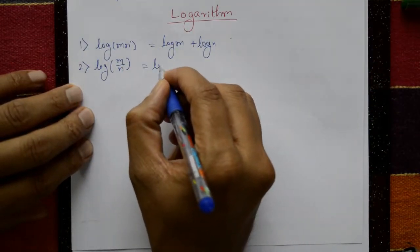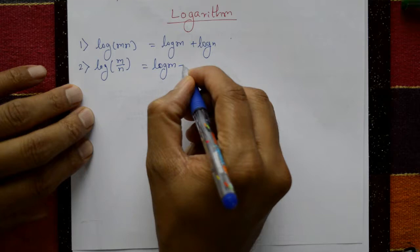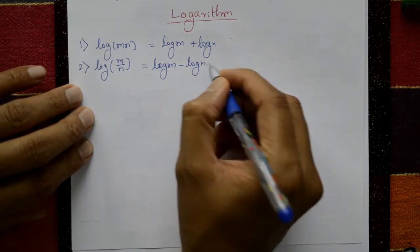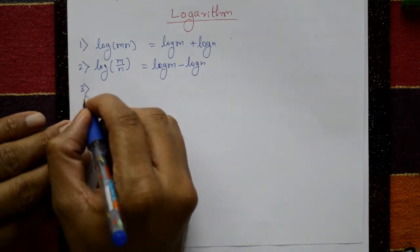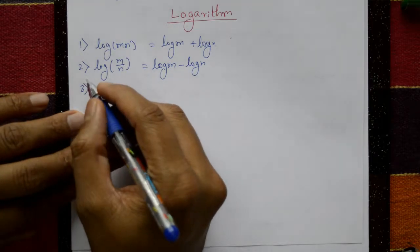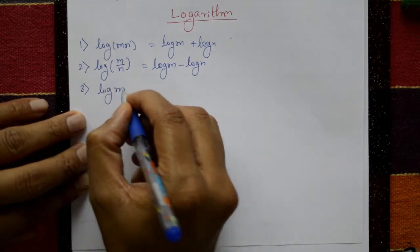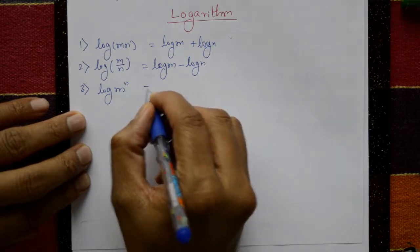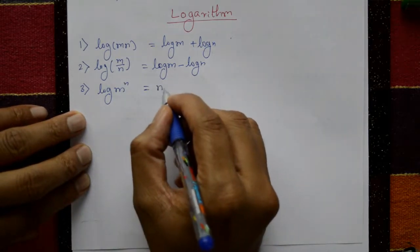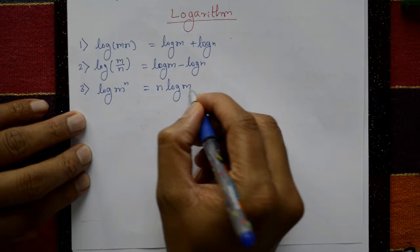This is equal to log m minus log n. Third one, log m raised to n. These are the properties: n into log m.